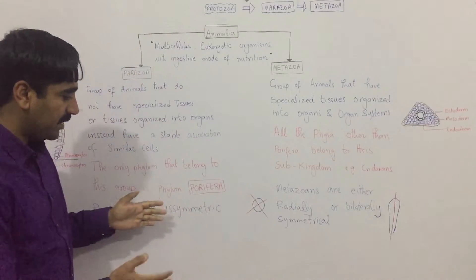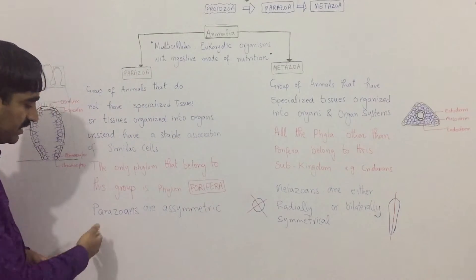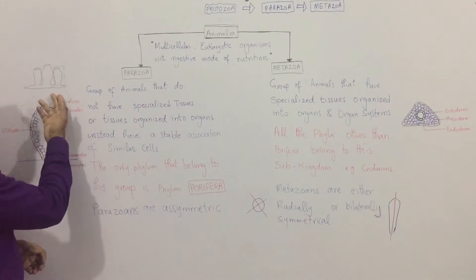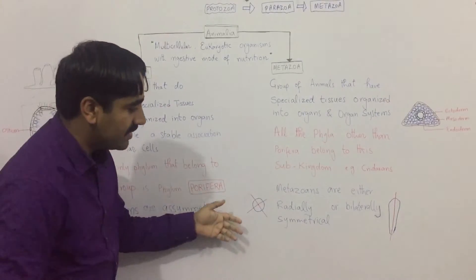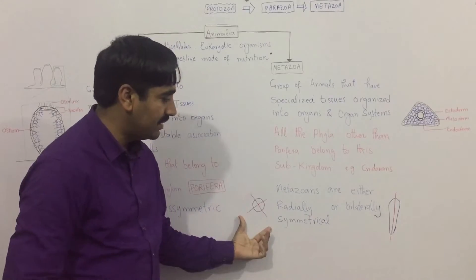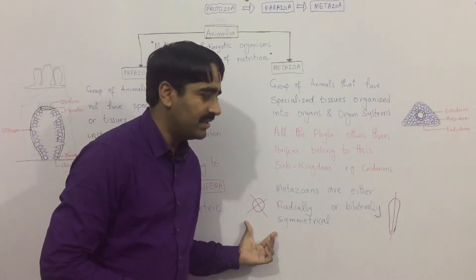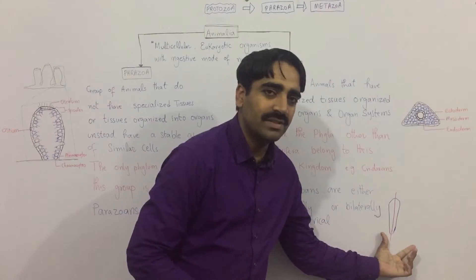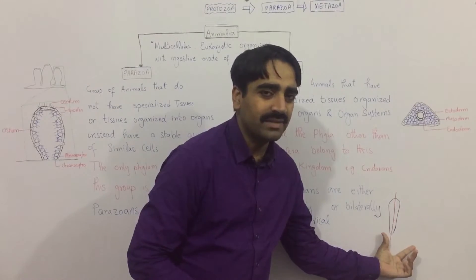Comparing the symmetry of both, the parazoans were asymmetric, whereas the metazoans are either radially symmetrical, as in the case of jellyfish, or they are bilaterally symmetrical, as in the case of planaria.